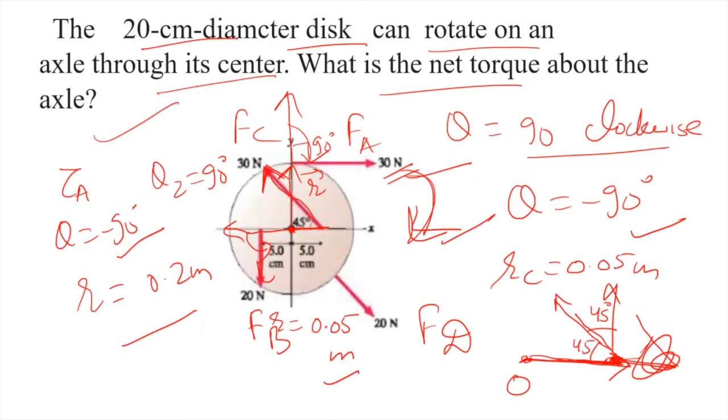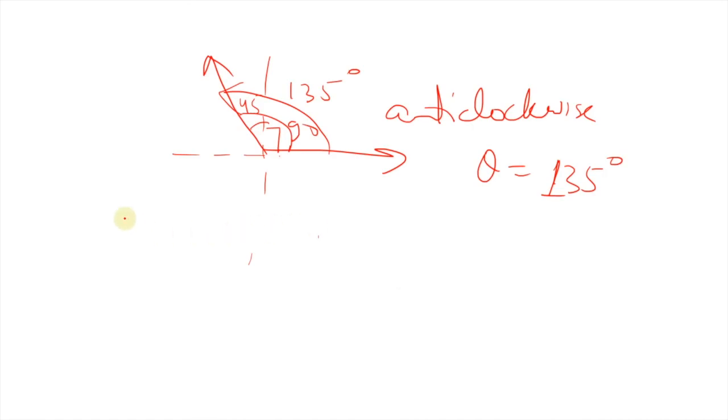For force D, you can see this is r and this is the direction of F, so the angle between them is zero. So definitely torque because of this will be zero. So simply now you'll add the three torques: torque A plus B plus C, and torque D is zero.